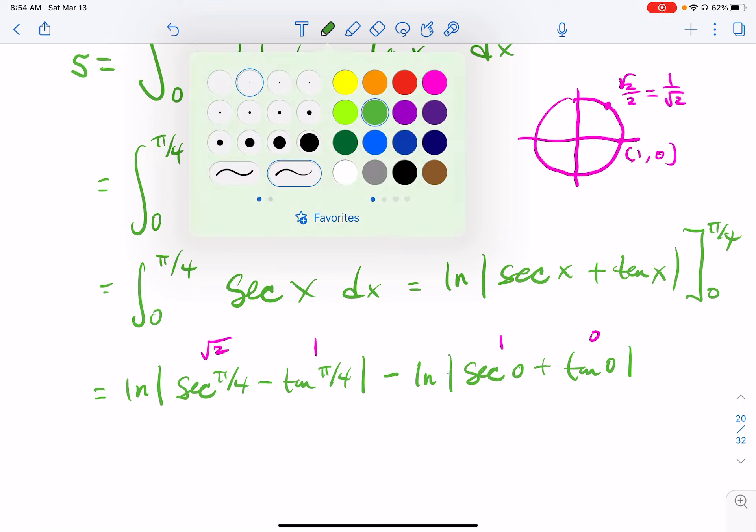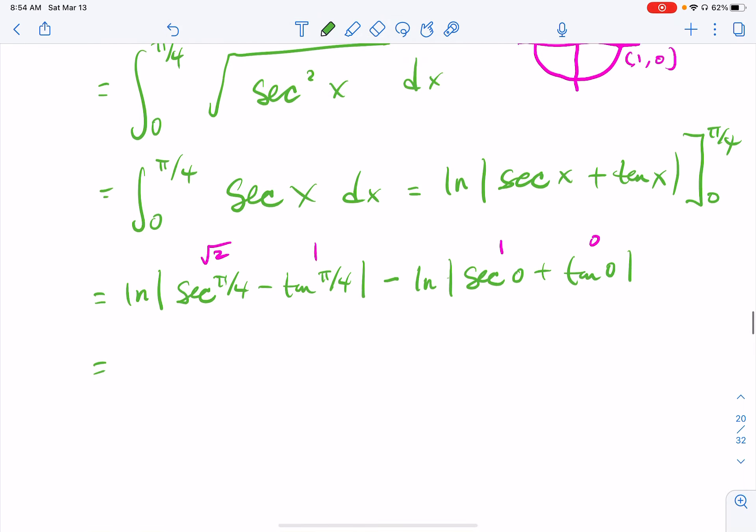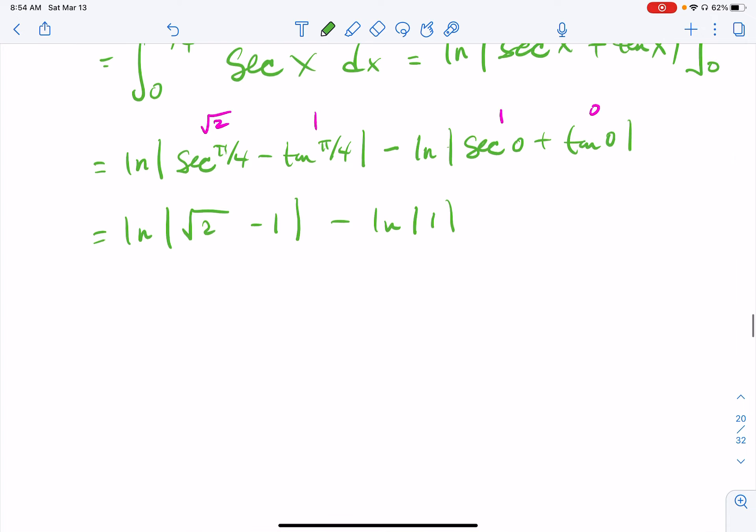So cleaning this thing up, I have the natural log of the absolute value of square root of two minus one minus the natural log of absolute value of one. Well, the natural log of one is just zero, so you can get rid of it. And I do believe that square root of two is bigger than one, so you can get rid of the absolute values as well.